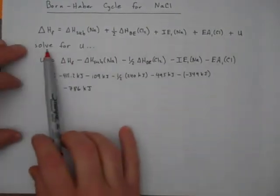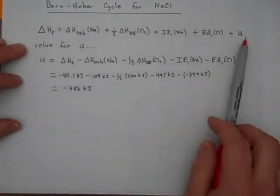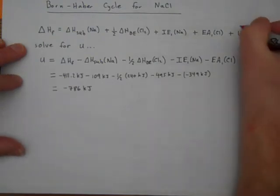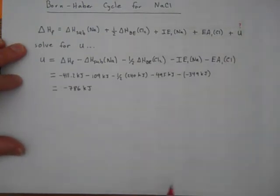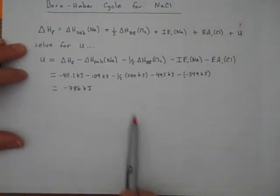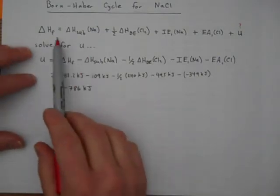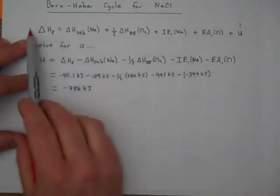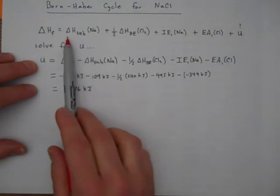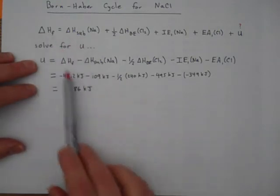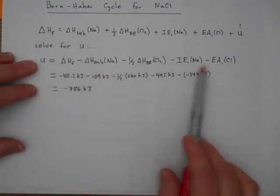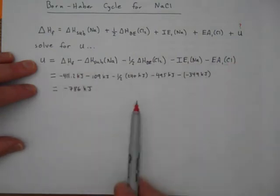Now what we're going to do is solve for U. We'll take this equation and solve for lattice energy because that's the quantity we want to know. I'll subtract all these other terms from this side of the equation, subtract delta H of sublimation from both sides to get that term, and so on. This is what we end up with.